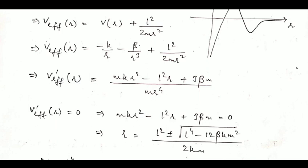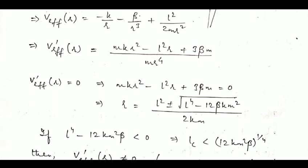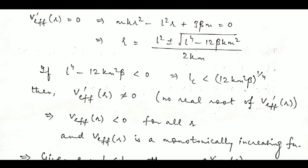Therefore, if L⁴ - 12Km²β, which is the discriminant, becomes negative, this means the angular momentum is less than (12Km²β)^(1/4).